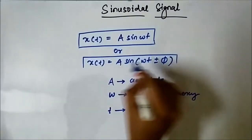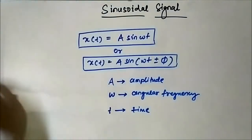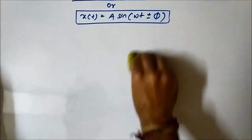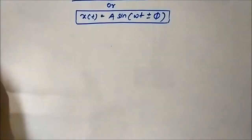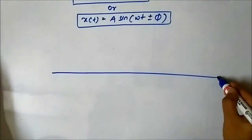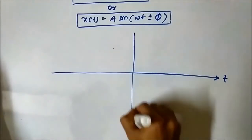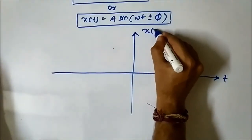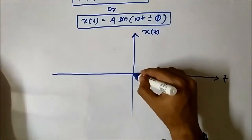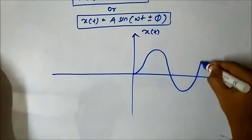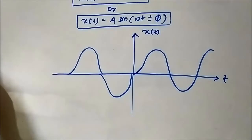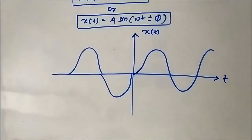Let us draw a sinusoidal signal. We have the time axis and the amplitude axis — x(t) vs t. We draw A sin(ωt): since sin(0) = 0, the signal starts from the origin, then has positive and negative values, going up and down like this — and so on. This is a sinusoidal signal in the continuous time domain.